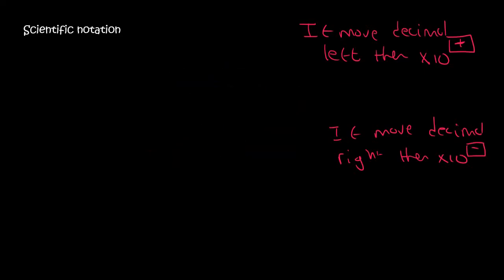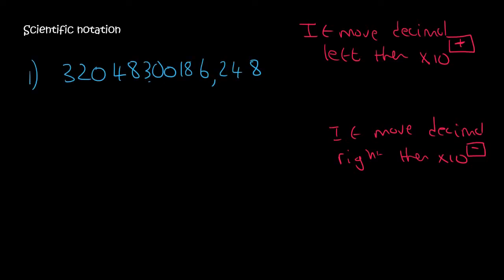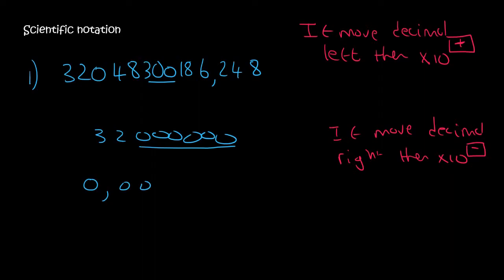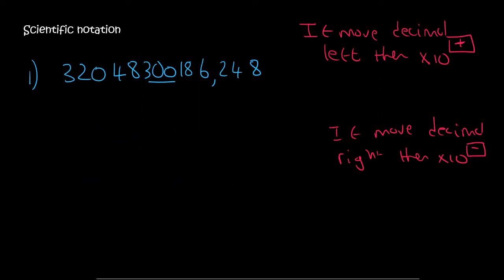So if you move the decimal right, then you'll say times 10, but then you will use a negative number. Now I'm going to give you a mix of the different types. Remember, if there's a whole lot of zeros in the front or at the back, you don't include it in the answer. But if the zeros are in between other numbers, like over here, then you still include them.